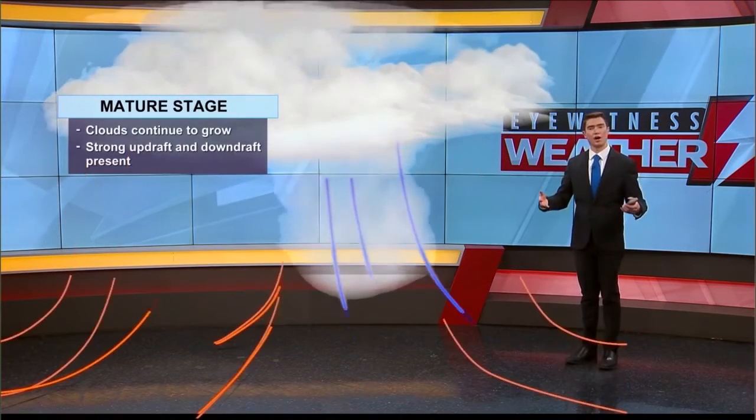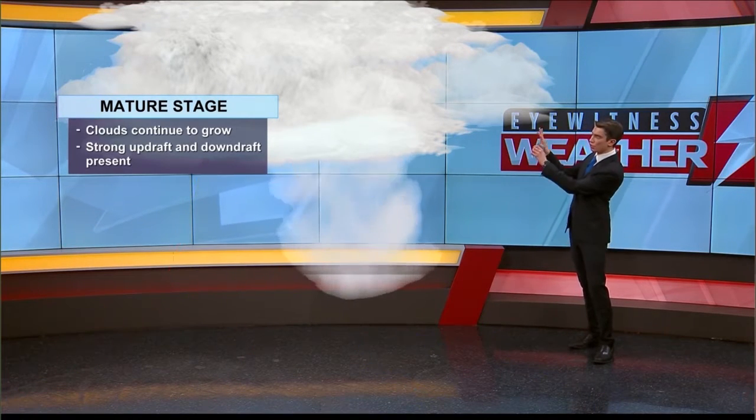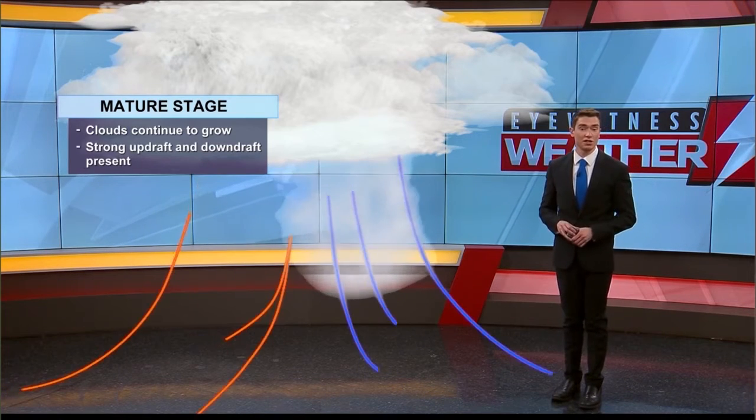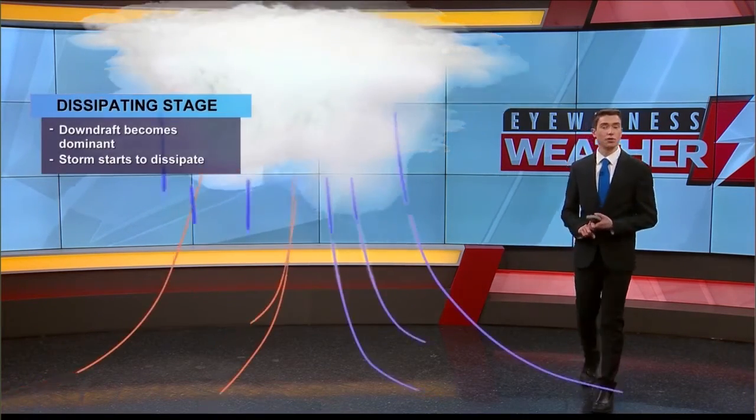Now we need those clouds to continue to rise. We need two things: an updraft and also a downdraft. That updraft is the warm moist air that continues to rise into the clouds, which often helps to keep those clouds growing. You often hear the name cumulonimbus cloud — those clouds deepen within this stage. And we're also talking about the downdraft: what goes up must come down. That descending air spreads out and oftentimes creates some damaging winds at the surface that we often hear of in damage reports.